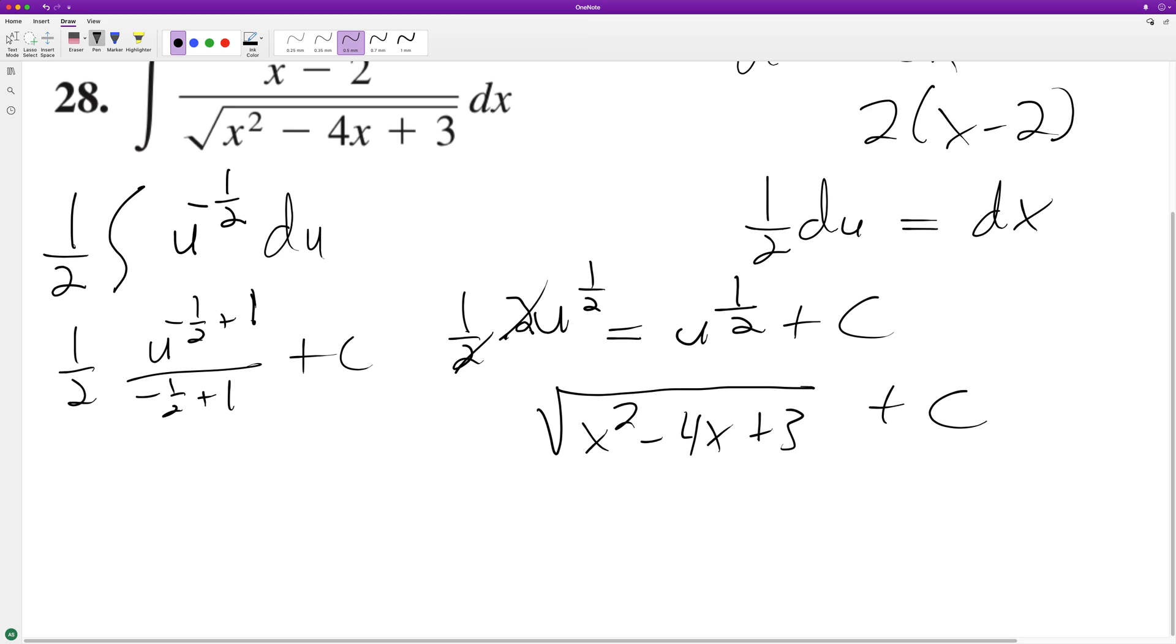So we can test this by taking the derivative, which will be one half times the inside, which is equal to the quantity 2x minus 4. And then what we get is it moves to the bottom: x squared minus 4x plus 3.